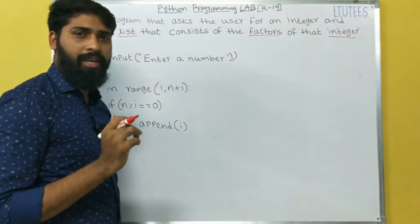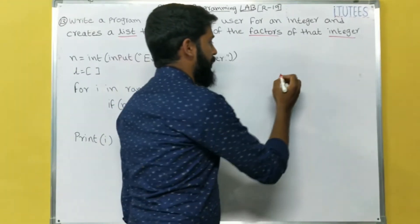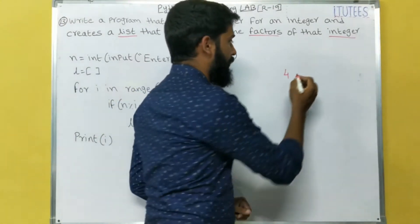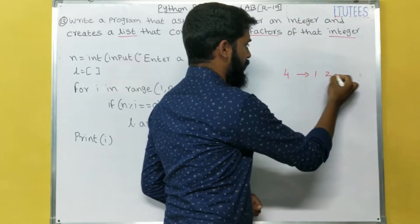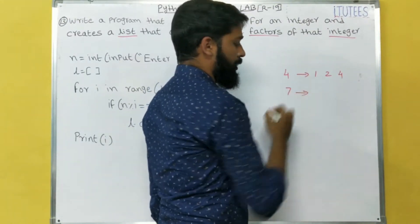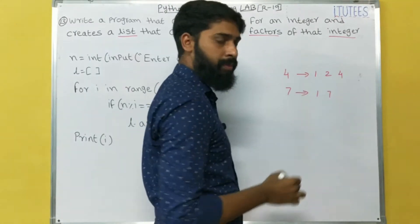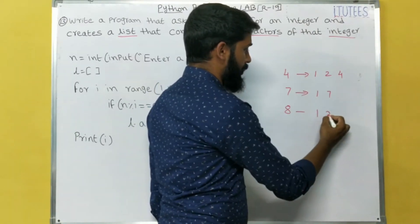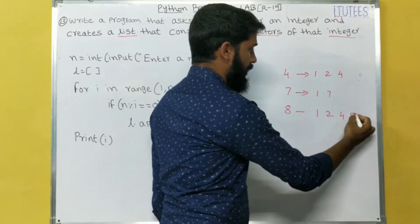So first we need to know what is a factor. For example, I am taking 4. So what are the factors for 4? The factors are 1, 2, 4. For number 7, the factors are 1, 7. For number 8, the factors are 1, 2, 4, 8.